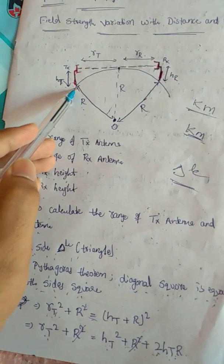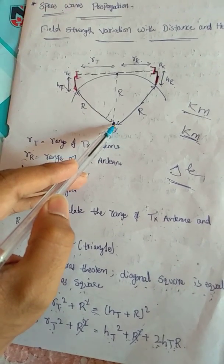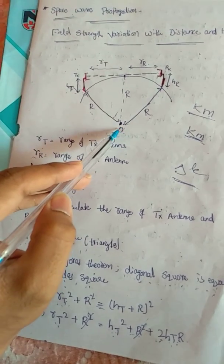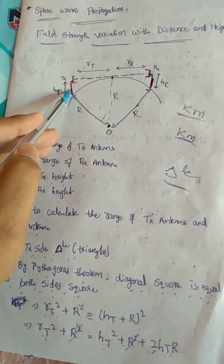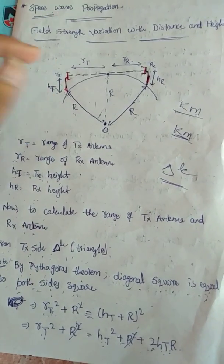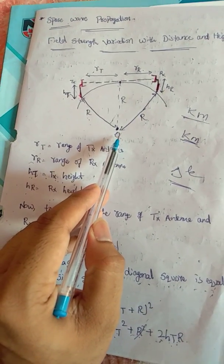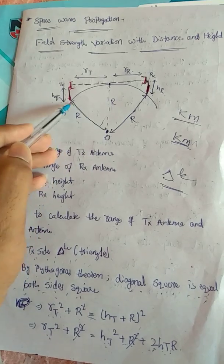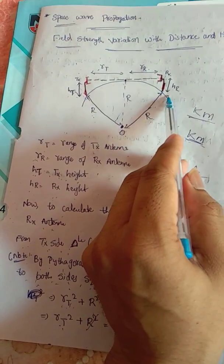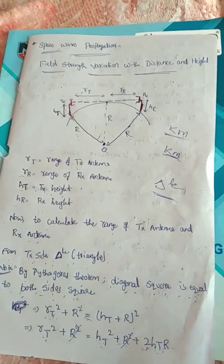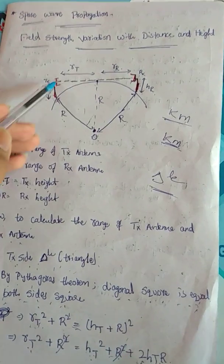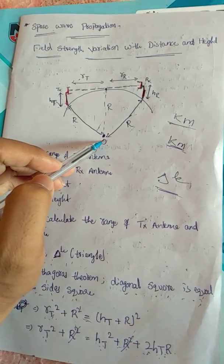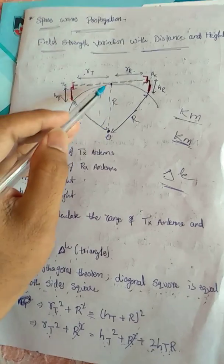We are taking a point which is the center of the core of the Earth, noticed as point O. We have a transmitter antenna and a receiver antenna with their respective heights, and the center core point O. The distance from the transmitter antenna to center point O is noticed as R, and the distance from the receiver antenna to center point O is also noticed as R. The distance from the center of the Earth's surface to the core center is also noticed as R.